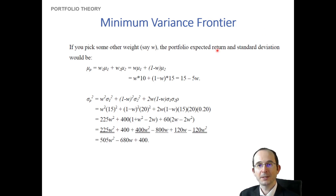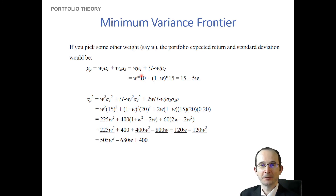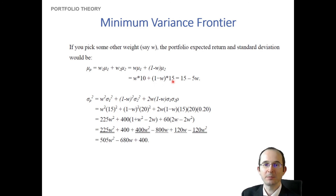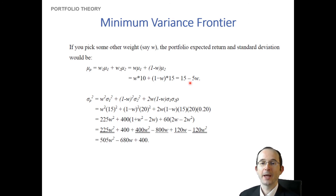What would happen if we picked some other weight? We know the portfolio return as a function of any arbitrary weight: it is the expected return on the first asset (10%) times its weight plus one minus that weight times the expected return on the second asset (15%). Collecting terms in w, this simplifies to 15 minus 5w — meaning for each additional unit of weight assigned to asset one, we give up 5% of return.